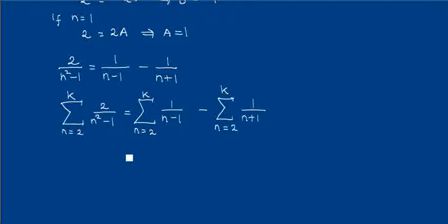Okay, now if we expand the first summation, we start with n equal to 2. We have 1 over 1, and then when n equals 3 we have 1 over 2, and the last term will be when n equals k, so we have 1 over k minus 1.